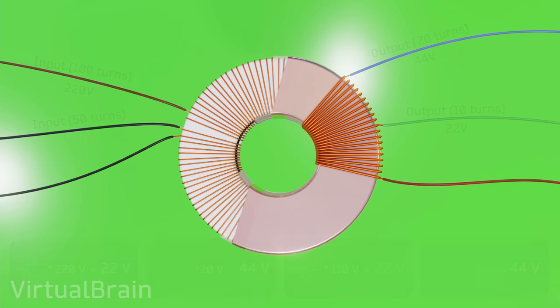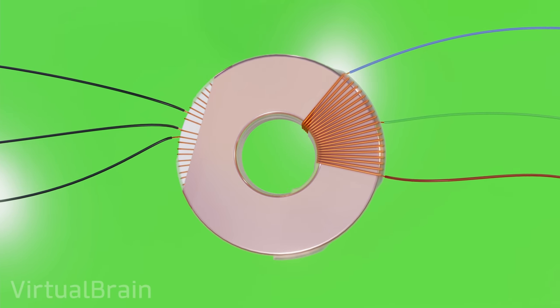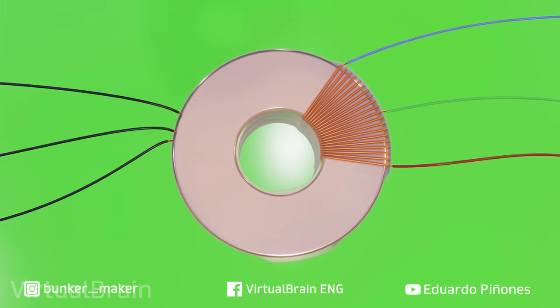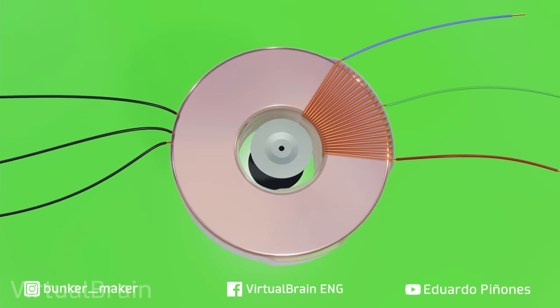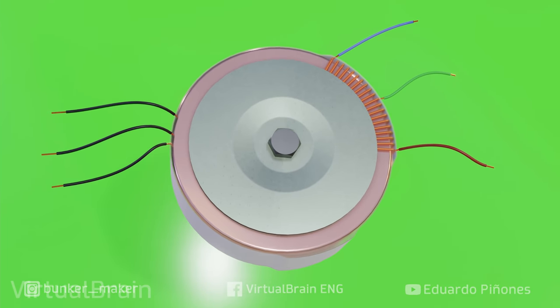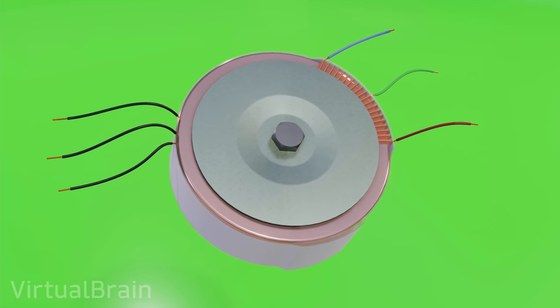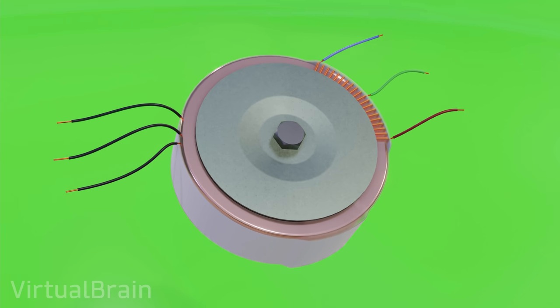We could take this to the extreme and add more sections of the primary coil and the secondary coil, obtaining dozens of possible combinations, but the concept would remain the same. I repeat, this is not something exclusive to toroidal transformers, but it seems important to mention it because many of them use this configuration.